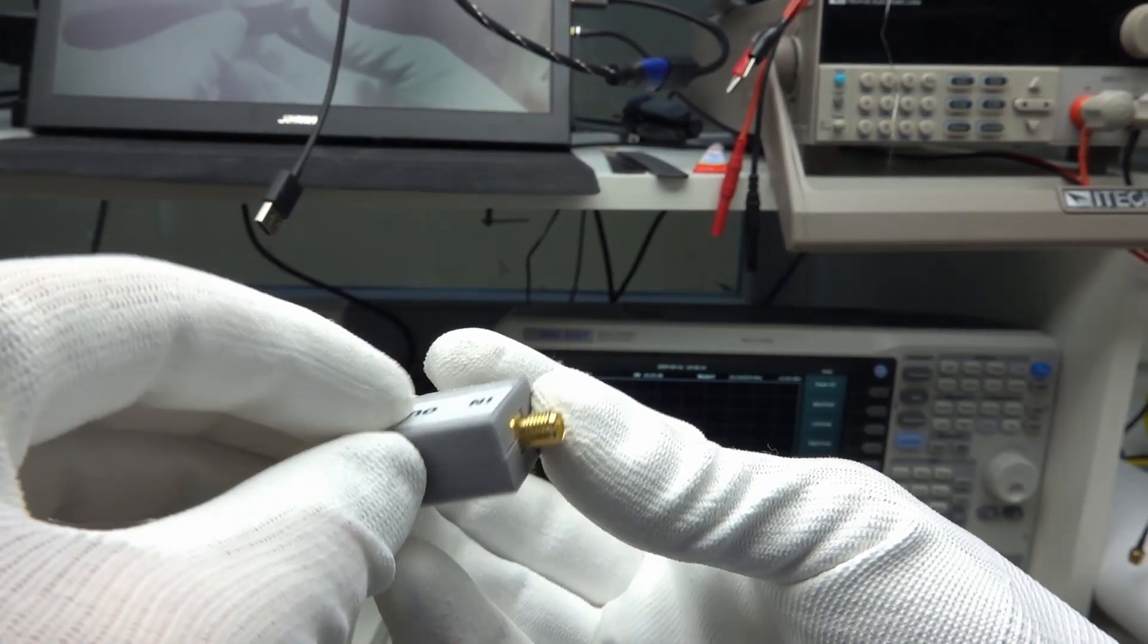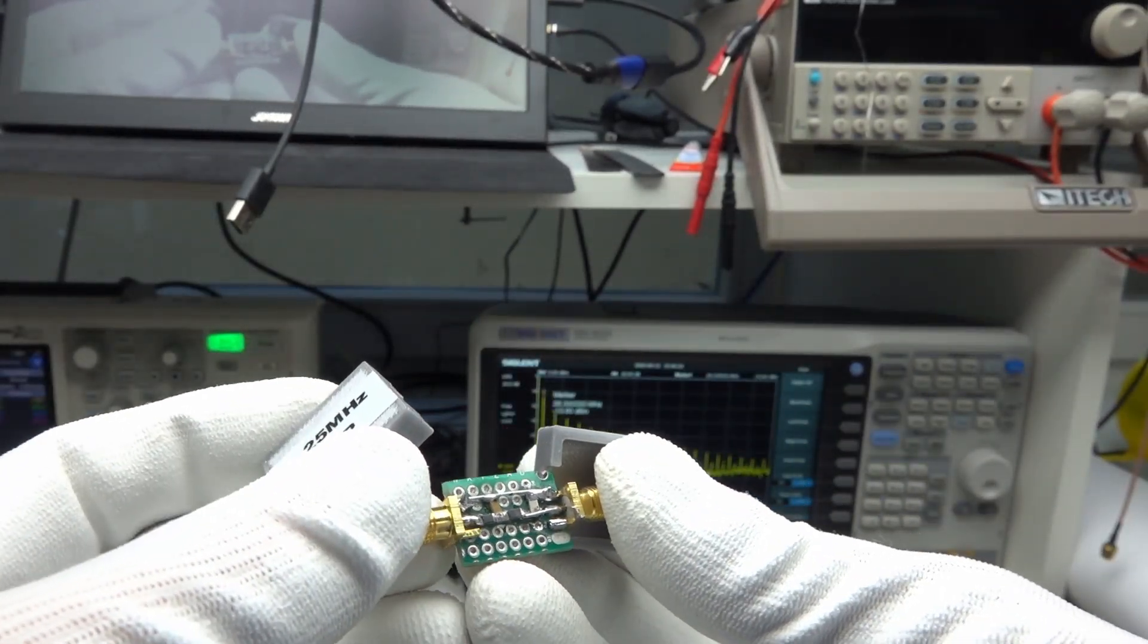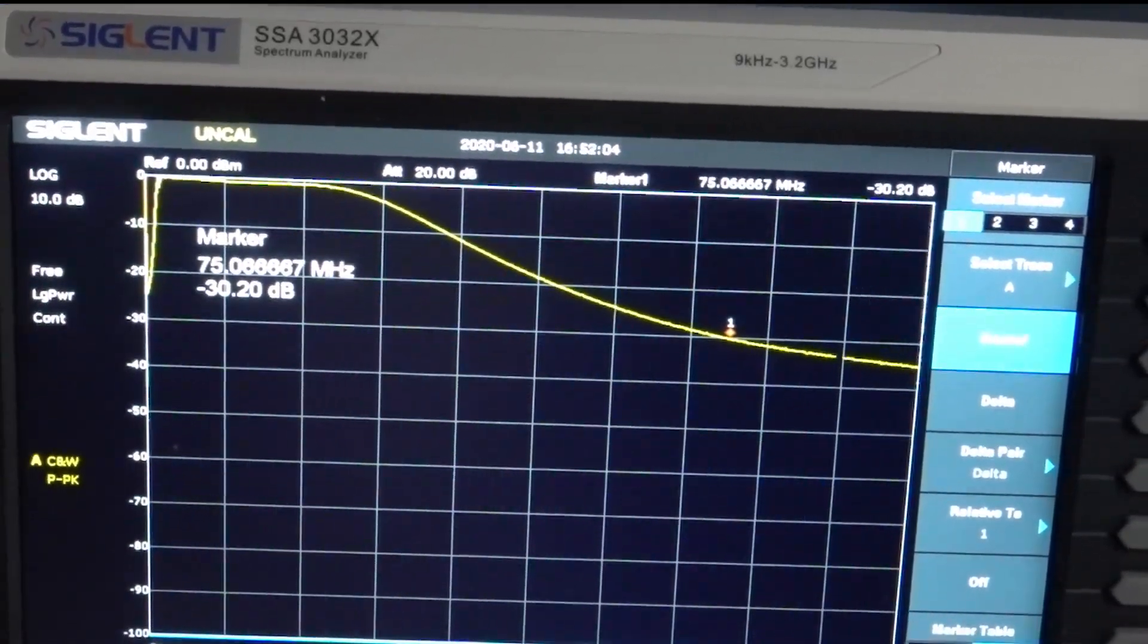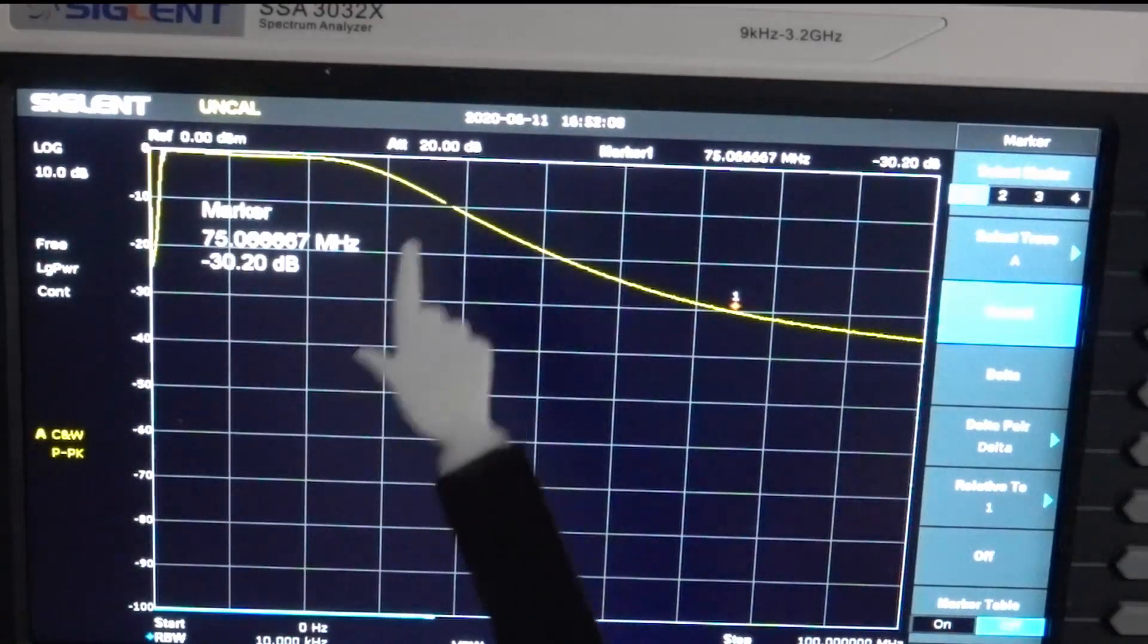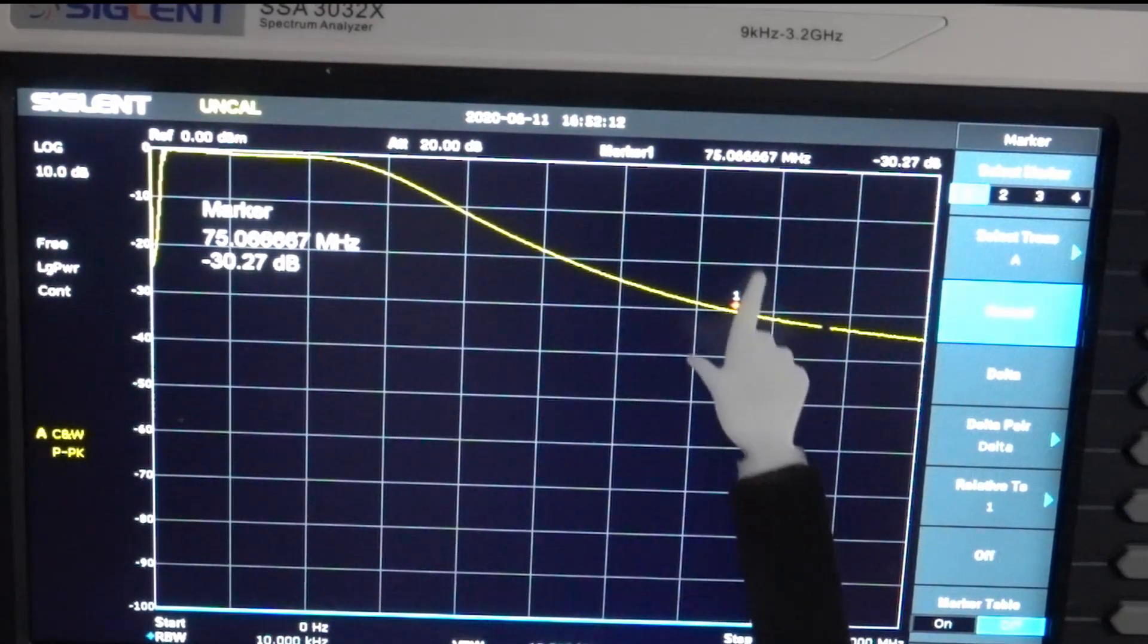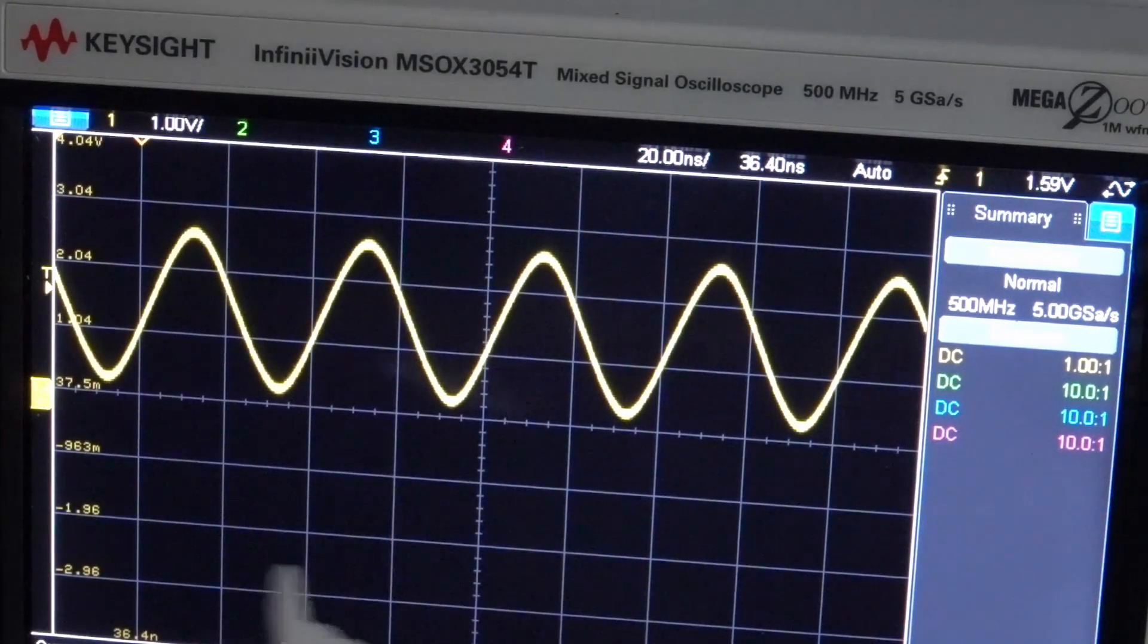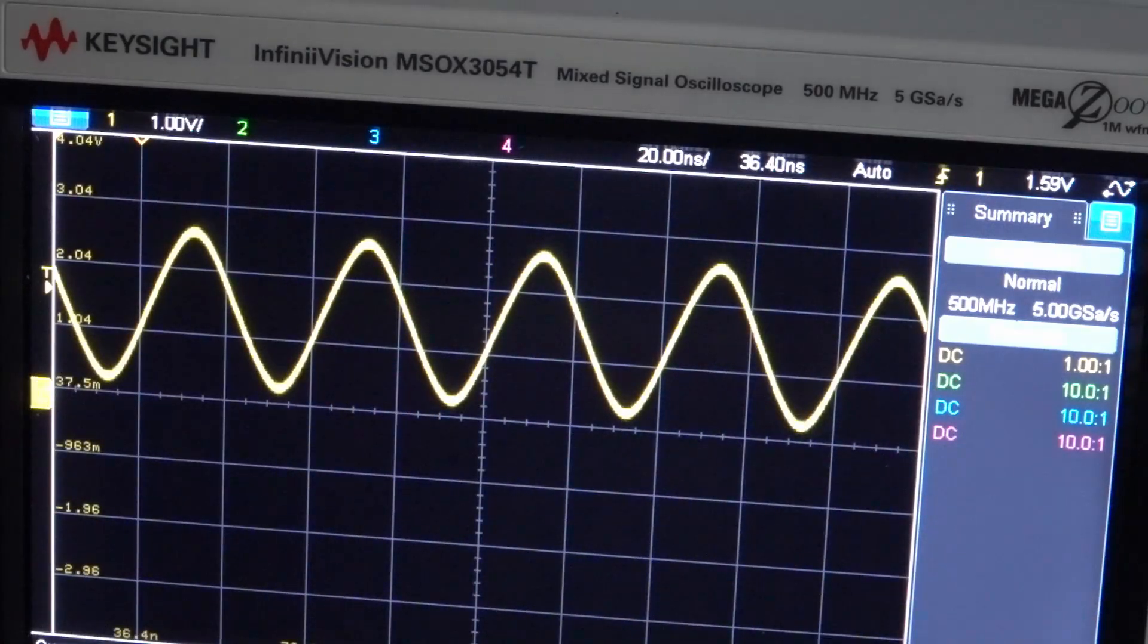And here is the result. All soldered under the binocular. Connected to the spectrum analyzer, we see a similar curve as simulated. The attenuation at 75MHz is a little lower than expected, but still ok. And if we insert the filter into the GPSDO signal, we get a nearly pure sine wave. Cool! So, we should be able to insert it into the LNB.